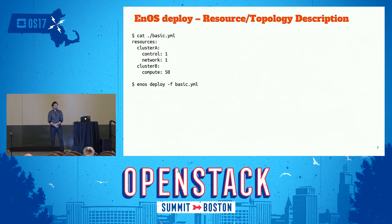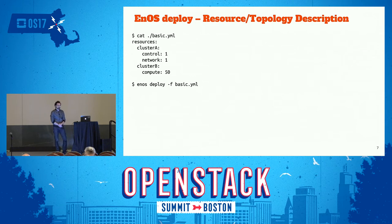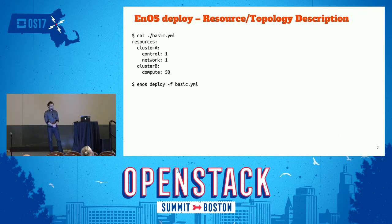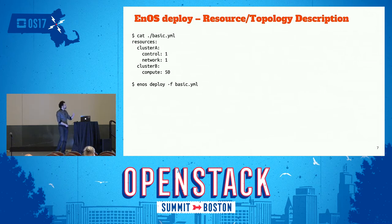ENOS is a tool to test and measure different configurations of OpenStack. The first thing you do is describe the OpenStack services you want to measure and describe the topology of those services, so that when you call ENOS, it will deploy that OpenStack over your testbed. Here is a really simple description: on cluster A, one control node for all control services and one network node for all network services, and on cluster B, 50 compute nodes. When you run ENOS deploy with this description, ENOS deploys an OpenStack that truly follows it.